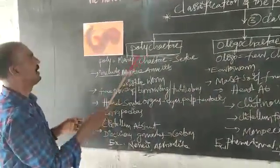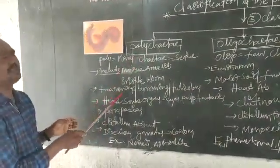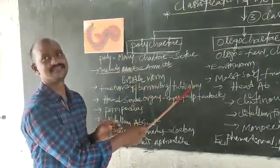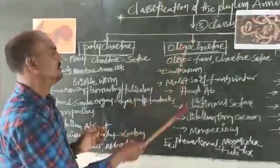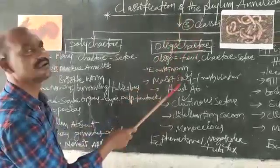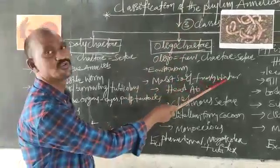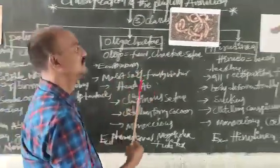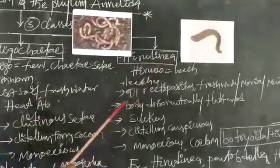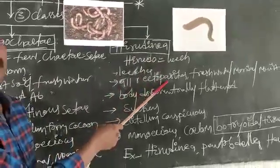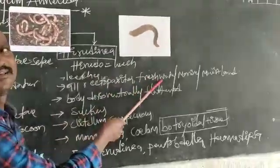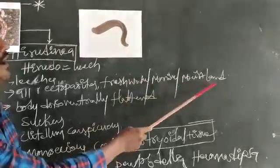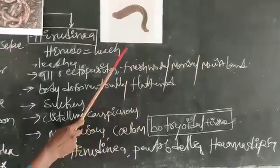The Polychaeta are free-moving, burrowing, or tube dwellers. Oligochaeta live in fresh water and also in moist soil. Hirudinea are all ectoparasites. Some live in fresh water, some in marine water, and some on moist soil.